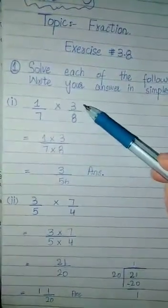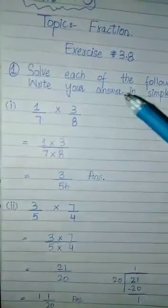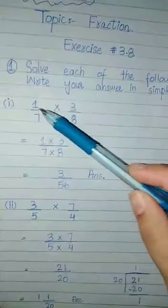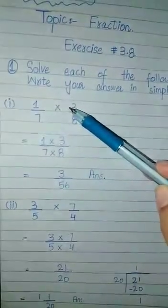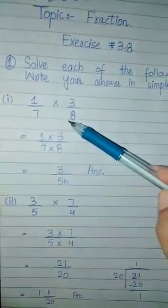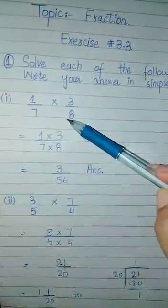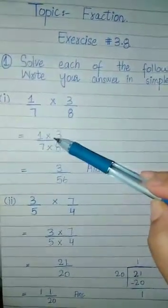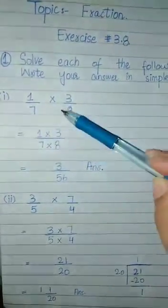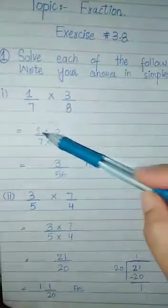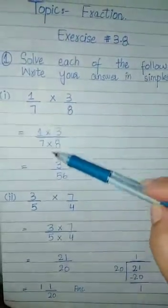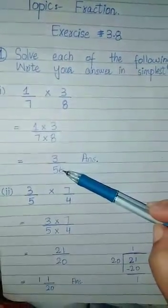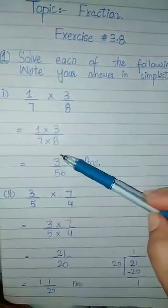Our first question is 1 by 7 multiplied by 3 by 8. What we do is multiply the numerators together and multiply the denominators together. So: 1 multiplied by 3 over 7 multiplied by 8 — 1 times 3 is 3, and 7 times 8 is 56, giving us 3 by 56.